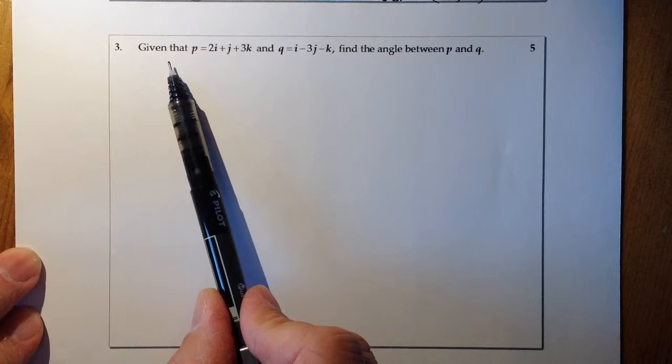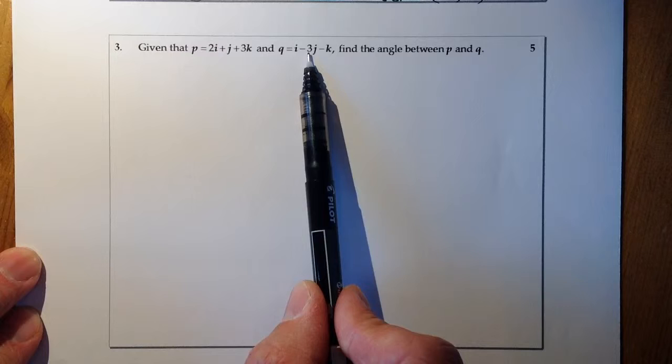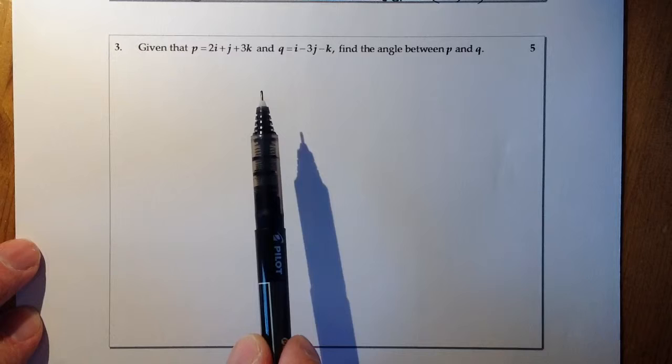What we've got here is we've been given that P is equal to 2i plus j plus 3k and Q is equal to i minus 3j minus k. Find the angle between P and Q.